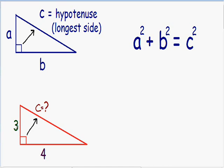We have one of the shorter legs of the triangle which has a length of three. You can call the shorter side of the triangle a or b — I'll just call it a. And since we call this short side a, then we have to call the other short side b. Now we can plug all our values into the formula: a squared plus b squared equals c squared.